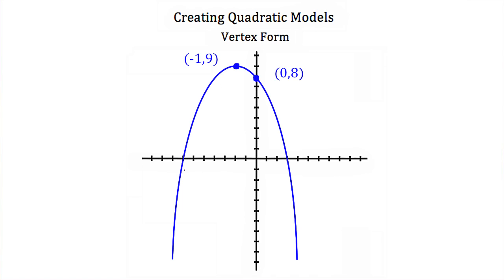Here we're given the graph of a parabola, and we're given its vertex and one other point on the graph. So if I want to create a quadratic equation that describes this parabola, the easiest way to do it would be to use vertex form. And we're going to use vertex form because we're given the vertex.